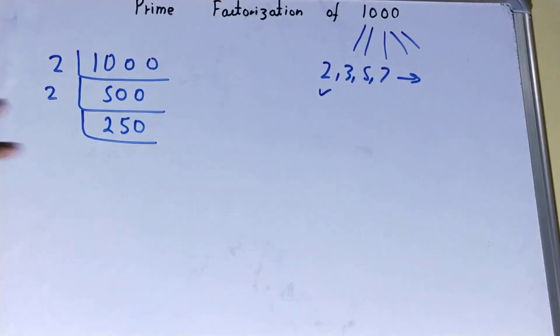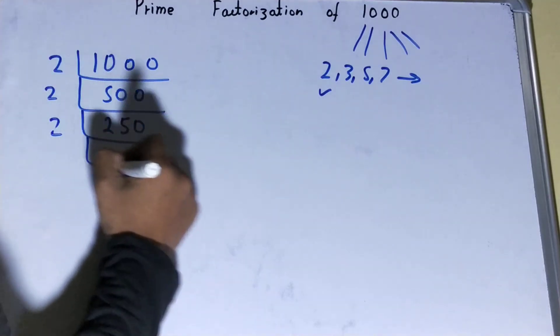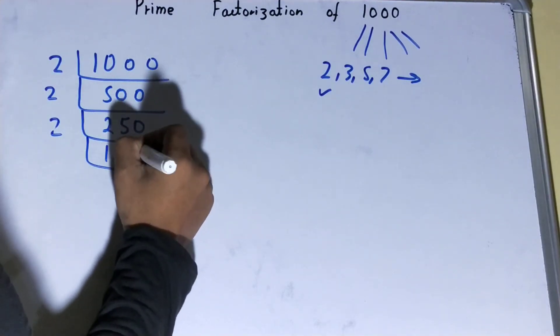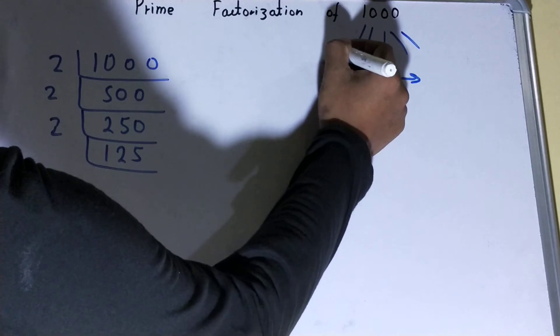Once you get 125, it is not further divisible by 2 because 125 is an odd number. So what we'll do is we'll go to the next lowest prime number, which we know is 3. Is this 125 divisible by 3? No it is not. If you try, you'll get a remainder of 2.